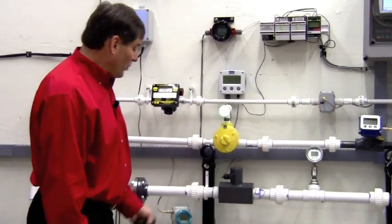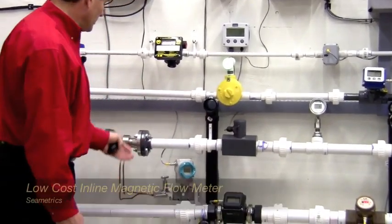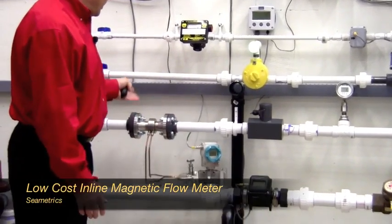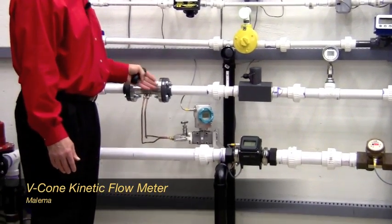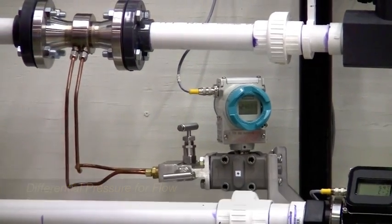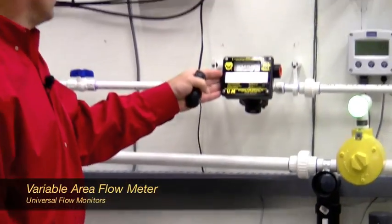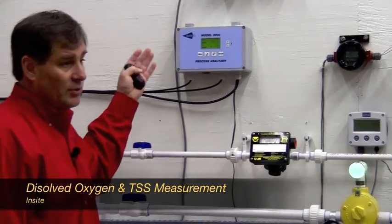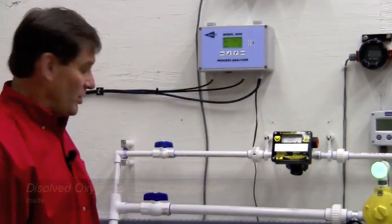Here's low-cost vortex and mag meters. We have a V-cone type flow meter along with a differential pressure transmitter for flow, an indicating vane type meter, and an analyzing device from Insight for dissolved oxygen and suspended solids.